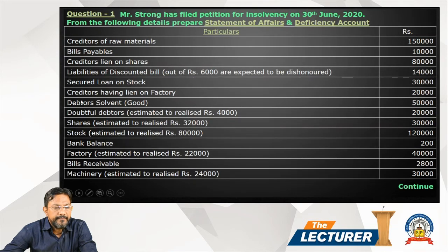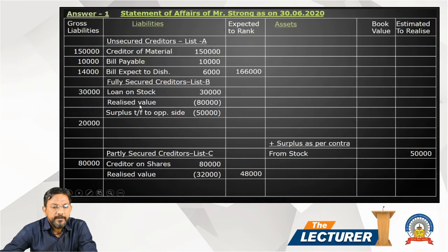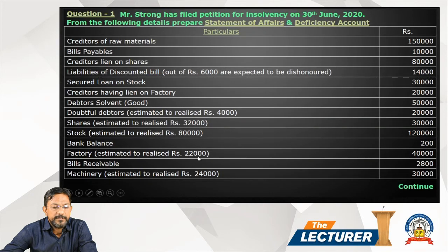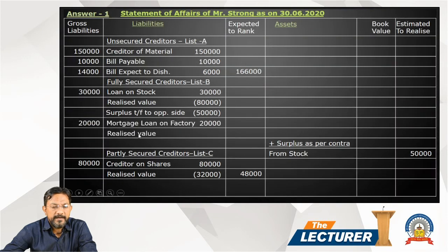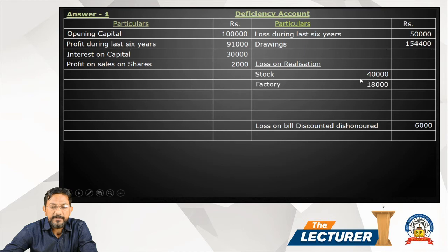Creditors having lien on factory: 20,000. The factory value is 40,000 — meaning fully secured at 22,000. Statement shows 20,000, mortgage loan on factory 22,000, and realizable value of factory is 22,000. The surplus goes to the opposite side. On factory, the loss for deficiency account is 18,000.